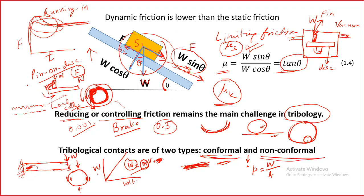Regarding friction measurement, there are many other geometries as well — not only pin-on-disc. You can also have an actual journal bearing type, plate on a cylinder, and many different geometries. For Newton's law of viscosity to find out the viscosity of a lubricant, you have two co-rotating cylinders: the inner cylinder is rotated and in the outer cylinder you measure the torque — the idea is very similar.